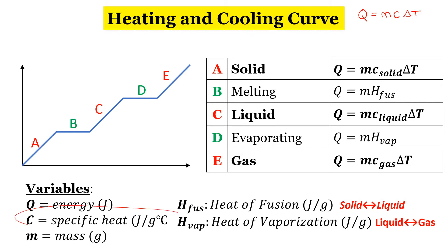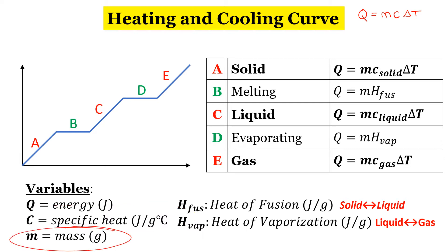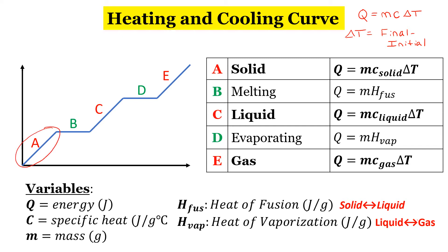The C is going to be our specific heat. The units for specific heat are joules over grams degrees Celsius. The mass is just the mass of the substance in grams. Delta T is the change in temperature, which is going to be your final temperature minus your initial temperature. The change in kinetic energy occurs any time we have a diagonal on our graph — that's where our temperature is changing, our energy is changing, our kinetic energy is changing.